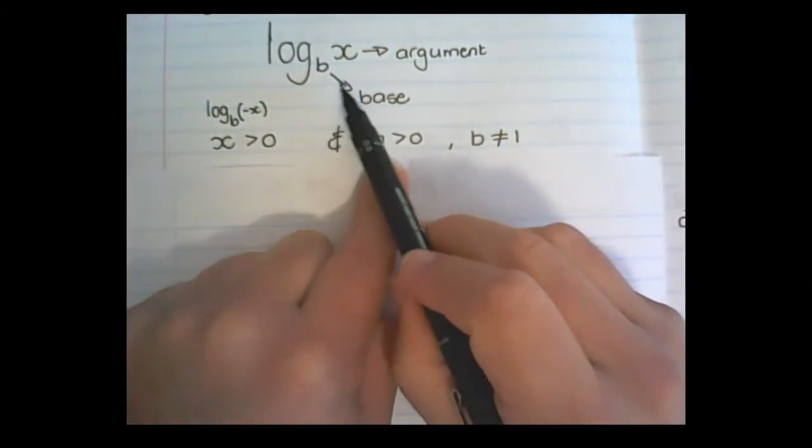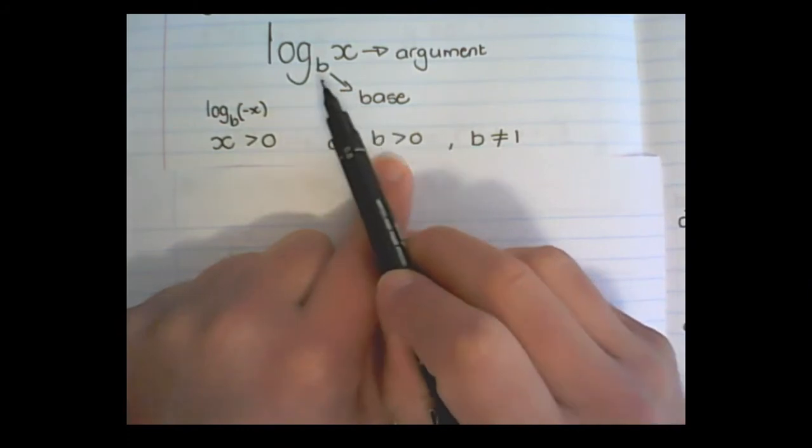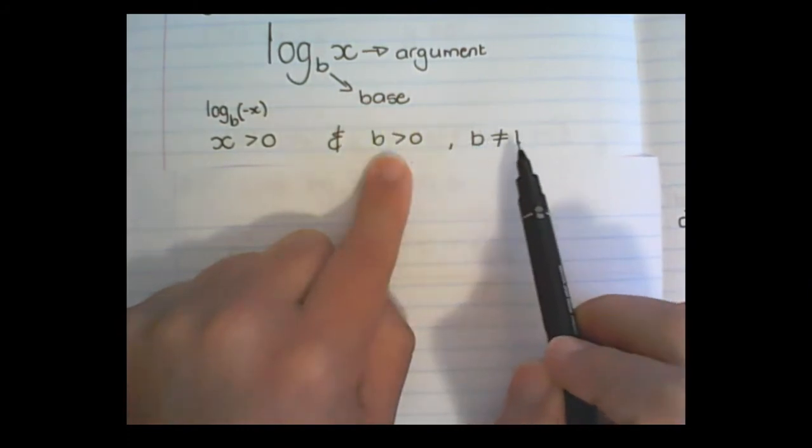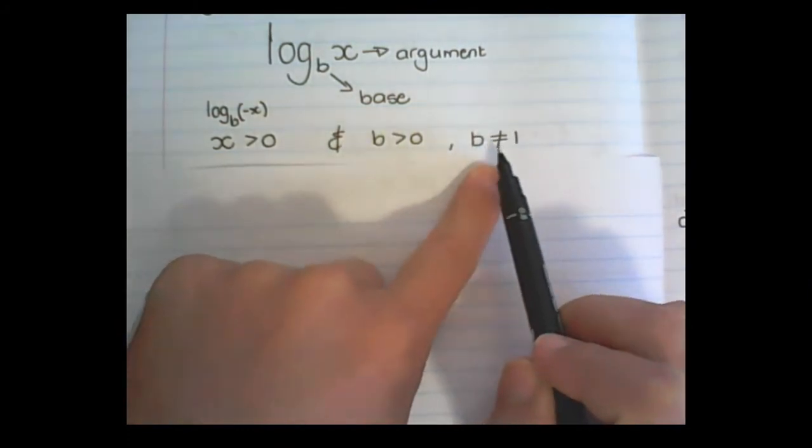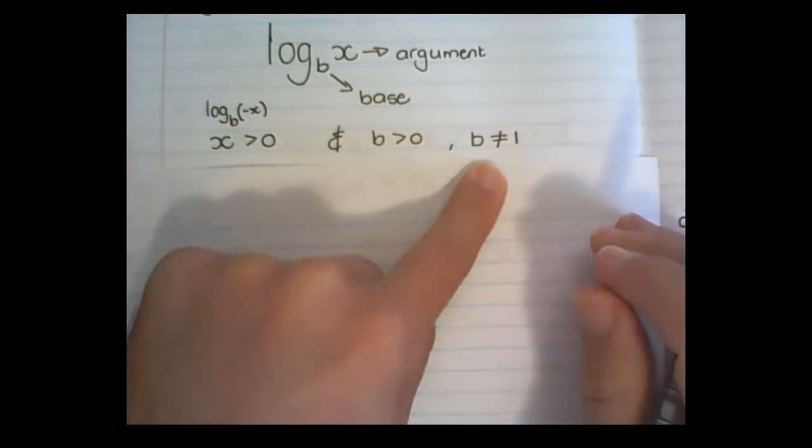The base must always be bigger than zero as well, and it can never be one. If it is equal to one, you'll get an error on your calculator.